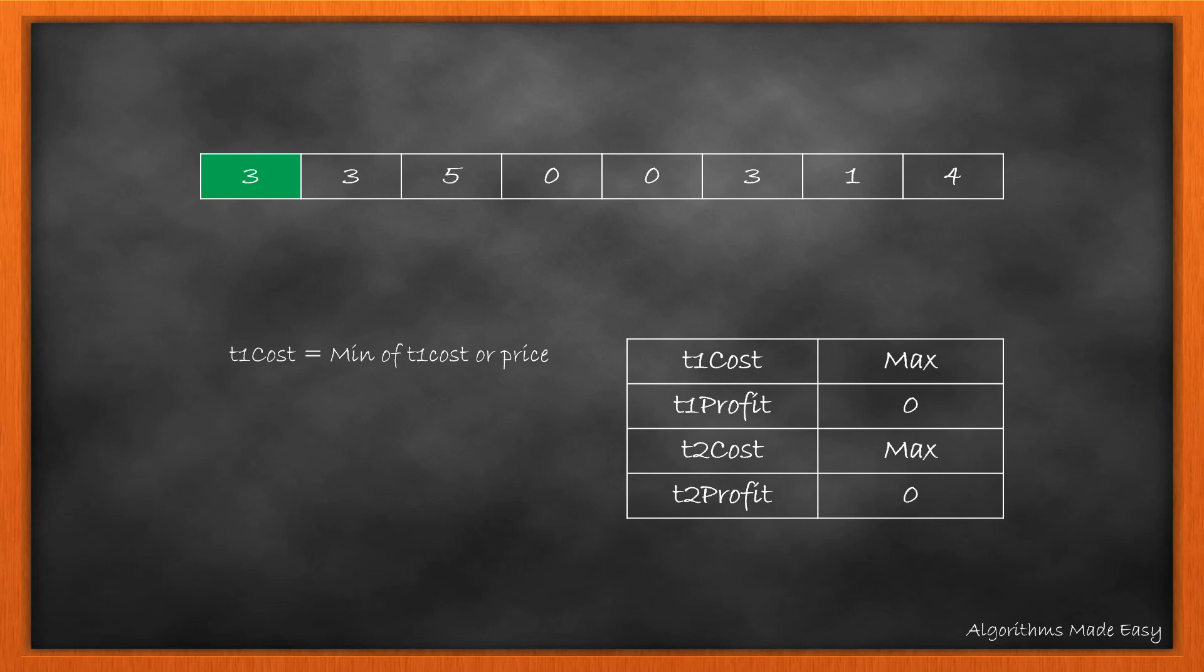For each value we update the four variables with the following certain logics. T1 cost will be the minimum of the T1 cost or the price. So we update it to 3. Now T1 profit will be the max of T1 profit and price minus T1 cost. That is the new profit. At the end of the array T1 profit will hold the answer for the scenario where only one transaction is allowed.